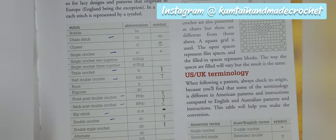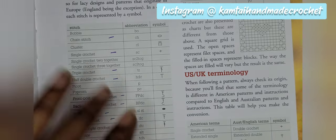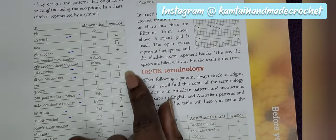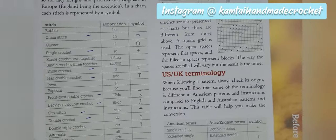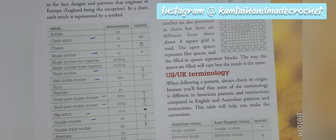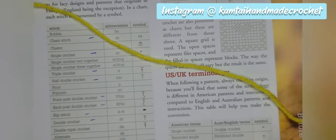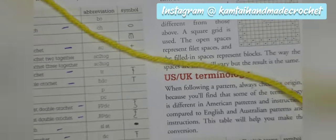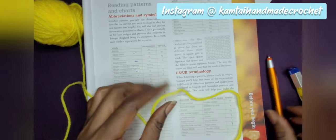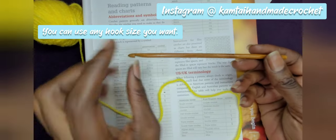This is for those who find a pattern and want to be able to copy it. You should at least know the abbreviations. Some patterns come with just the symbols, which is a little harder for me, so I just like to deal with the abbreviations. We're not going to get into the symbols portion — just the abbreviations. I have some simple red heart yarn here and my 5mm bamboo hook, which is my favorite hook.